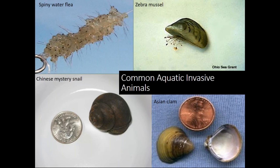Zebra mussels are also not in New Hampshire yet, but they are in Massachusetts and Vermont — on two of our borders. About the size of a pistachio nut, banded in brown and white or similar stripes, and D-shaped, they attach to hard surfaces via sticky strands. You'd see them on boats, buoys, black pipes, rocks, or anything hard underwater. If you start to see little pistachio-sized mussels attached to things, we'd like to know about it.